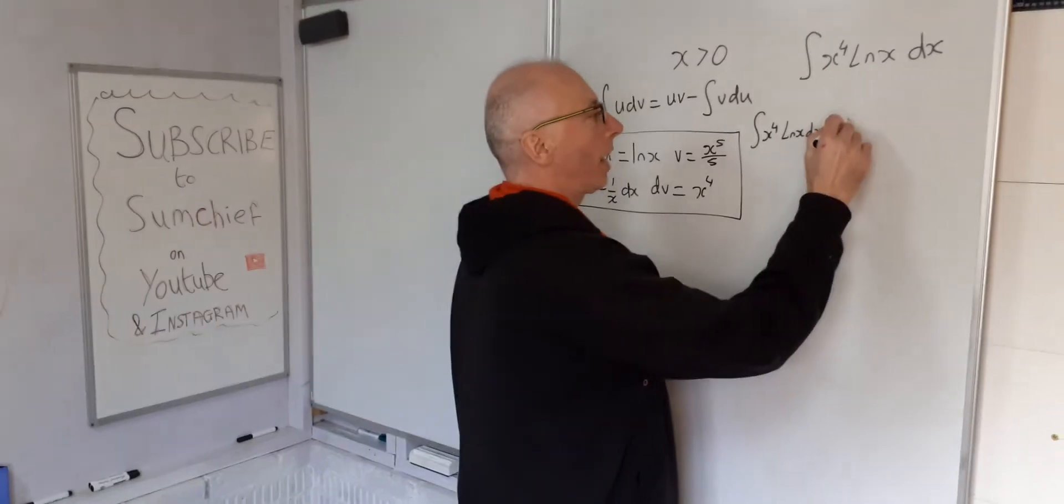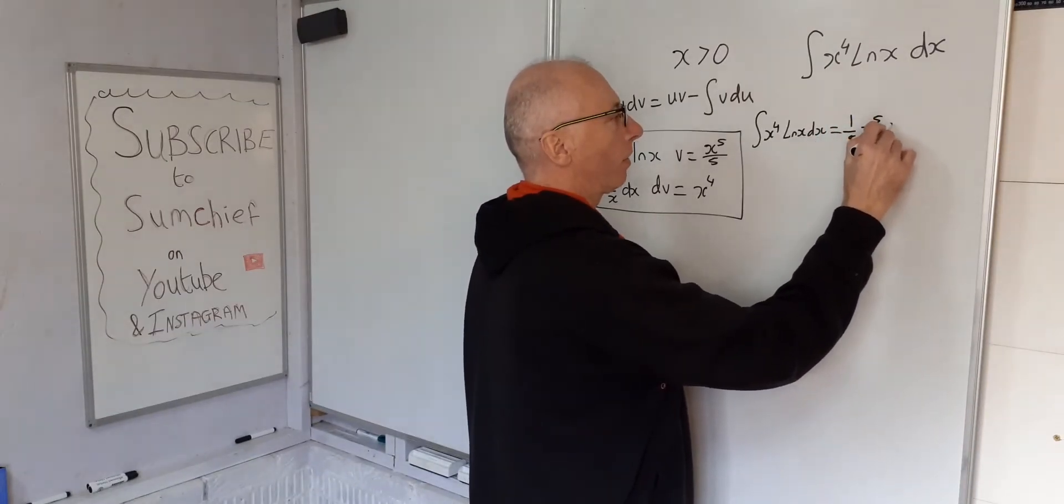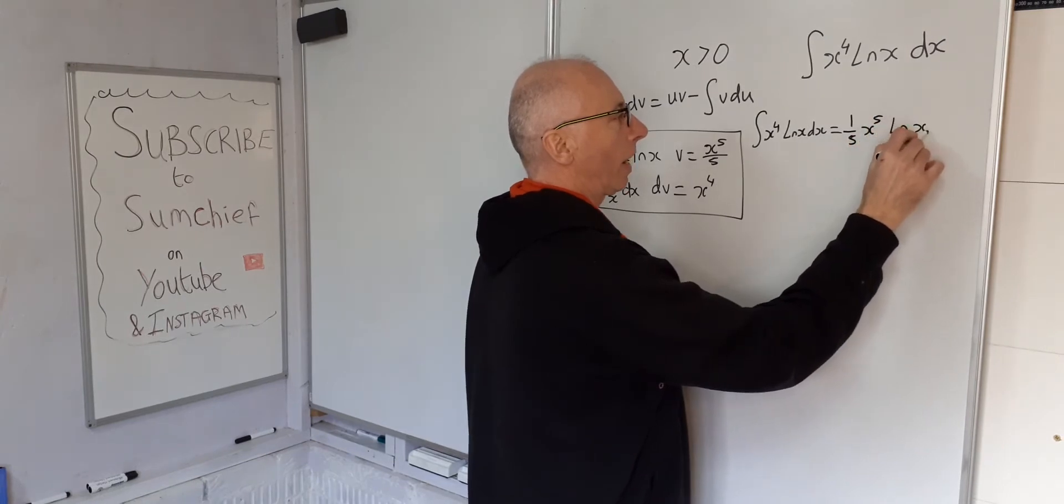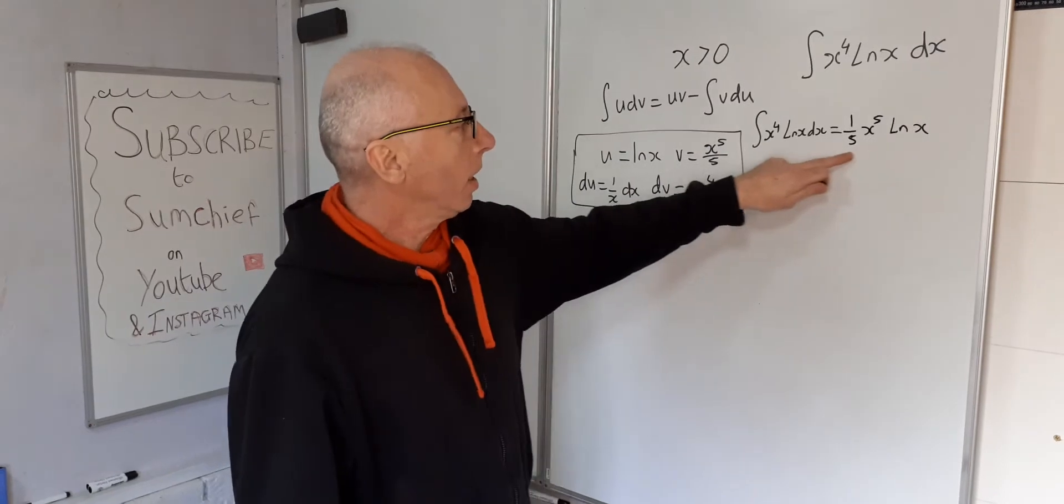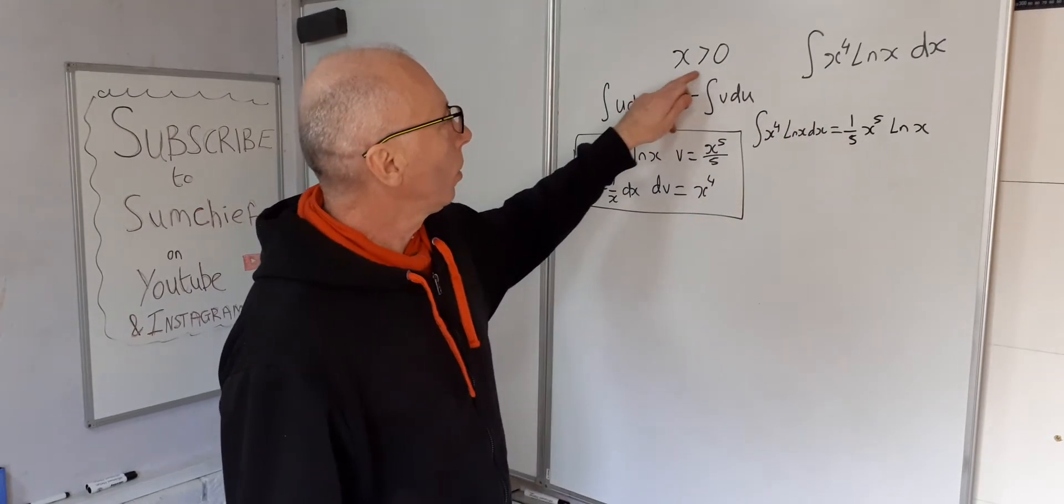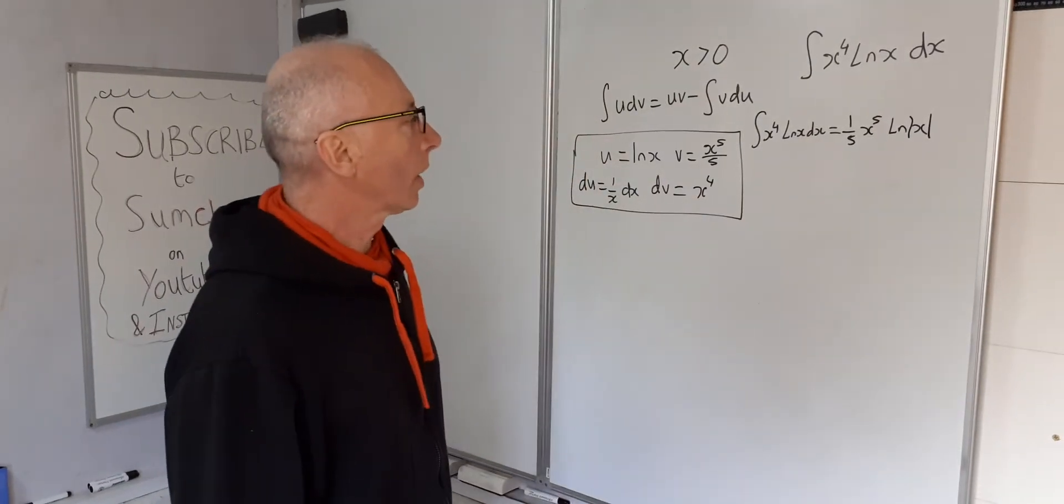So I'm just going to write that 1 over 5 x to the 5 natural log of x. So this is part of the answer. So just to make sure we stick to this rule, I'm going to put absolute value in there.